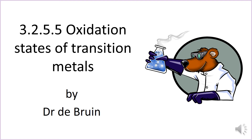This video is the next in a series looking at the AQA A-level chemistry topic of transition metals. This video is about oxidation states — we talk about how transition metals have multiple stable oxidation states, and then in particular look at two key examples: the oxidation states of vanadium and also the silver mirror test with Tollens' reagent.